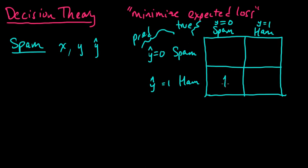So we're going to put the loss that would occur from this prediction under this state in this matrix. In some arbitrary units of loss, maybe this is something like the time that you waste by making this wrong classification.